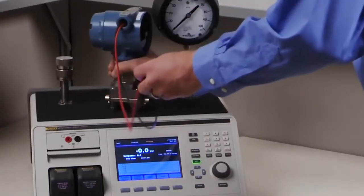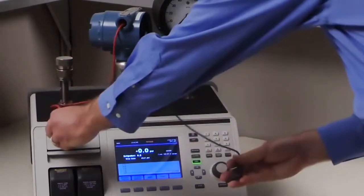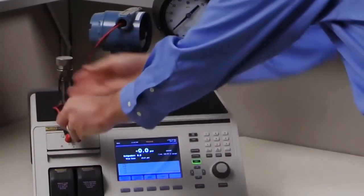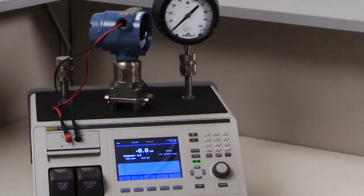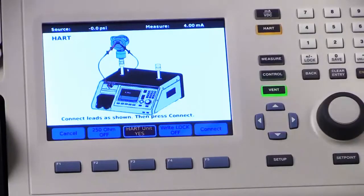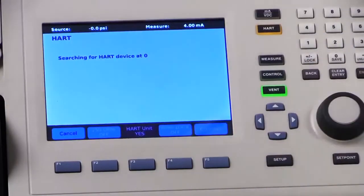HART communication is very similar. Connect the device under test to the EMM and press the HART button. The 2271A recognizes the device and allows you to trim and rearrange it.